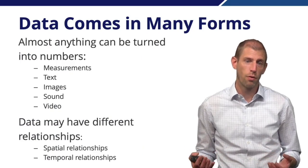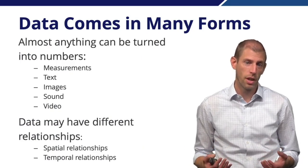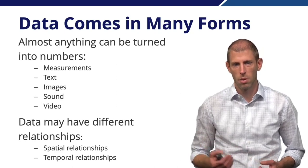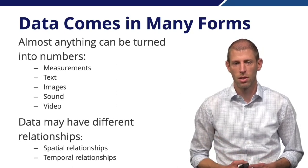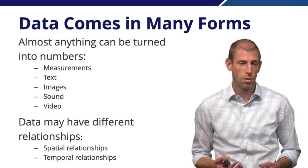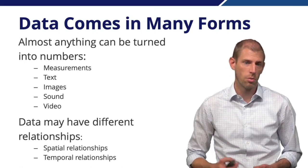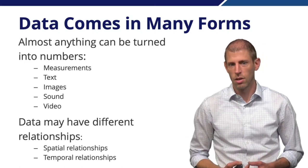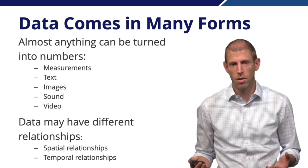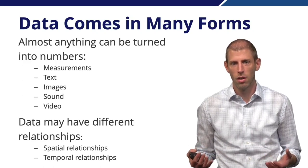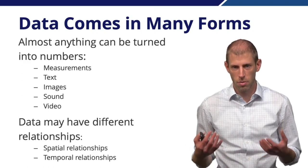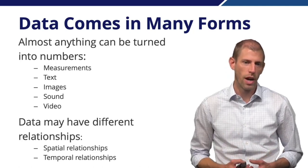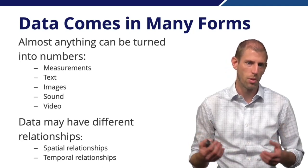Data can come in many forms, because almost anything can be turned into numerical values. Data can be measurements of an object or its dimensions, it can mean text — words, sentences, or documents — it can be images, sound, or even video. Images, sound, and video, even though on the surface they may not appear to be numeric, actually consist of numbers — for example, the values of pixels within an image.